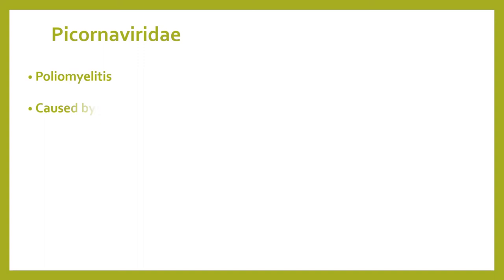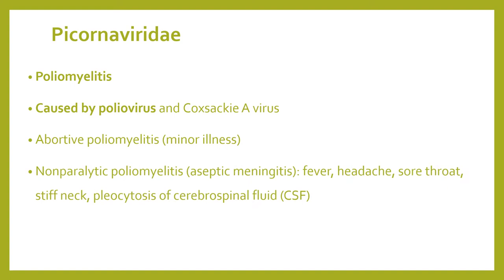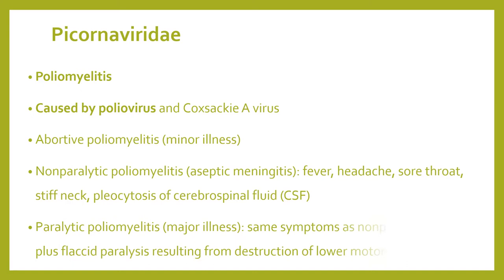Poliomyelitis is caused by poliovirus and coxsackievirus. It includes abortive poliomyelitis and non-paralytic poliomyelitis, otherwise labeled as aseptic meningitis, which manifests as fever, headache, sore throat, and stiff neck. There is also paralytic poliomyelitis, which is the major illness. It has the same symptoms as the non-paralytic type but with a flaccid type of paralysis resulting from destruction of the lower motor neurons.